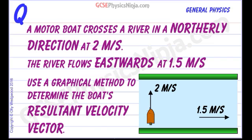So in order to work out the effect, the resultant velocity or the resulting velocity on this boat, we're going to need to add together these two vectors.